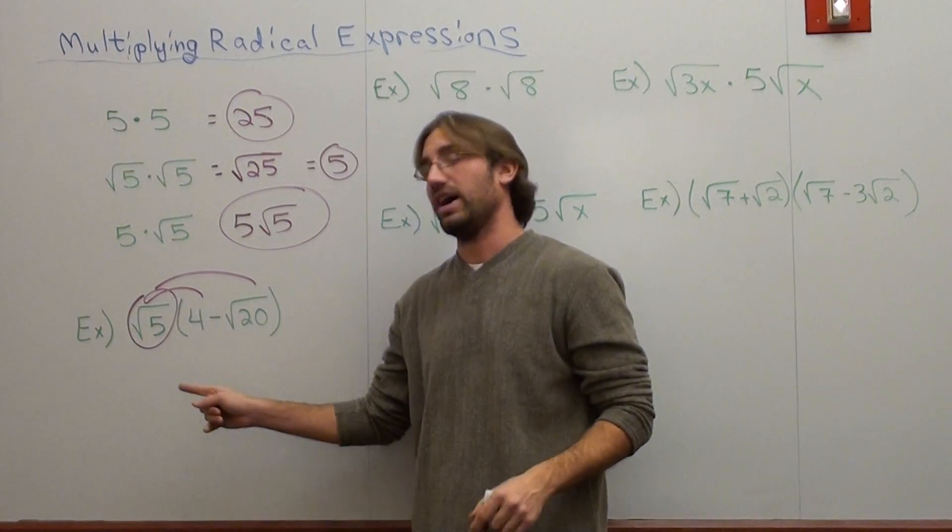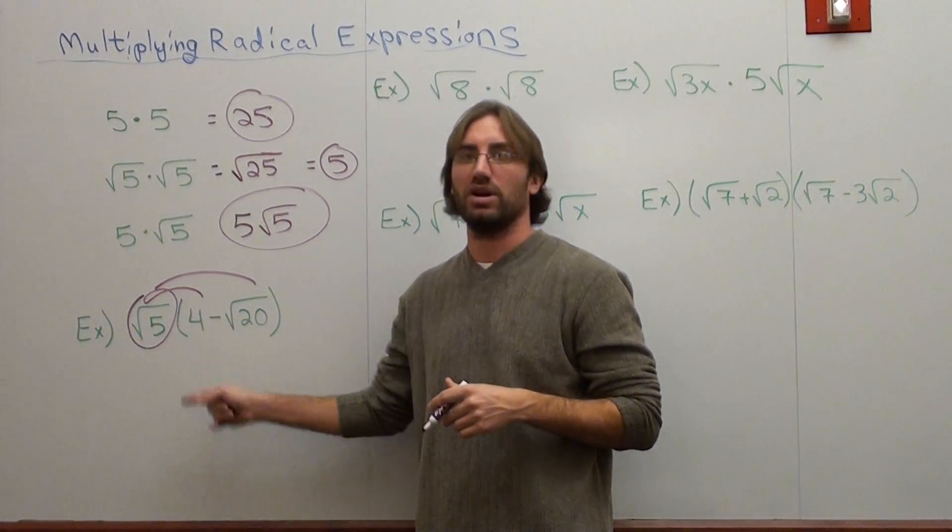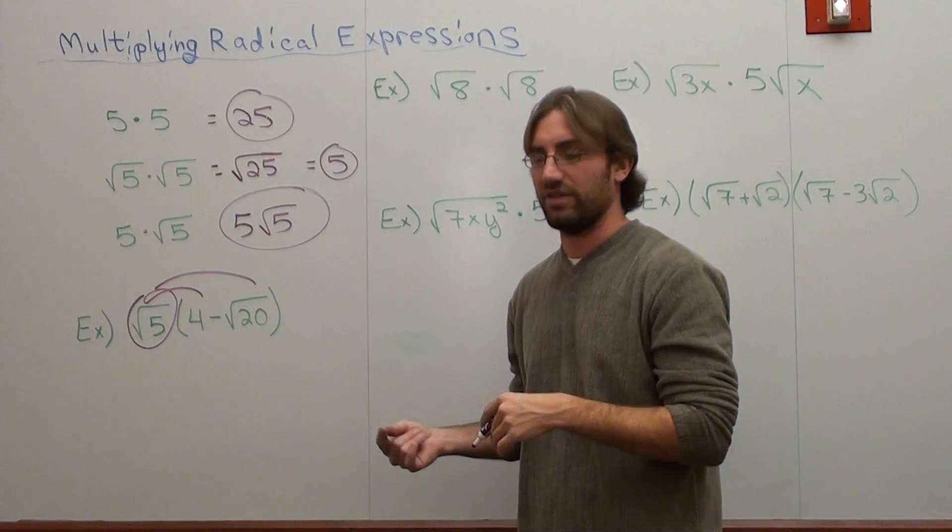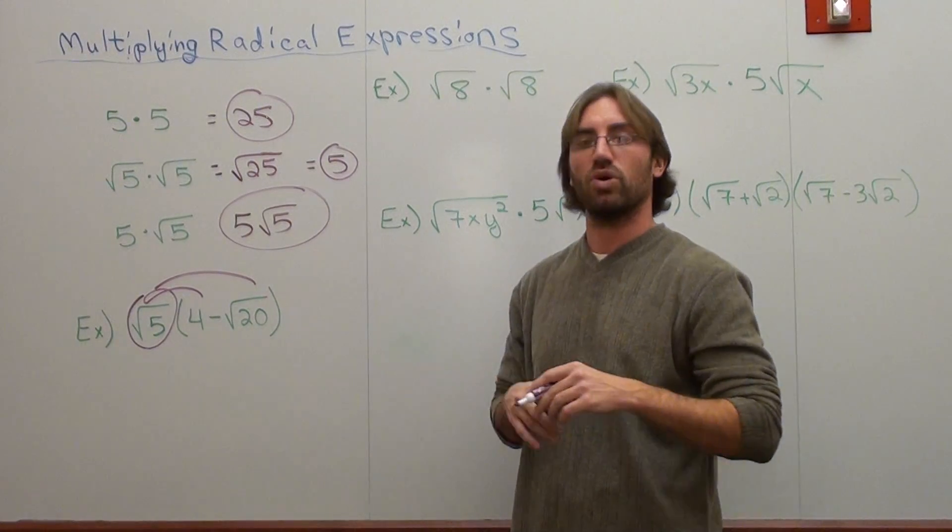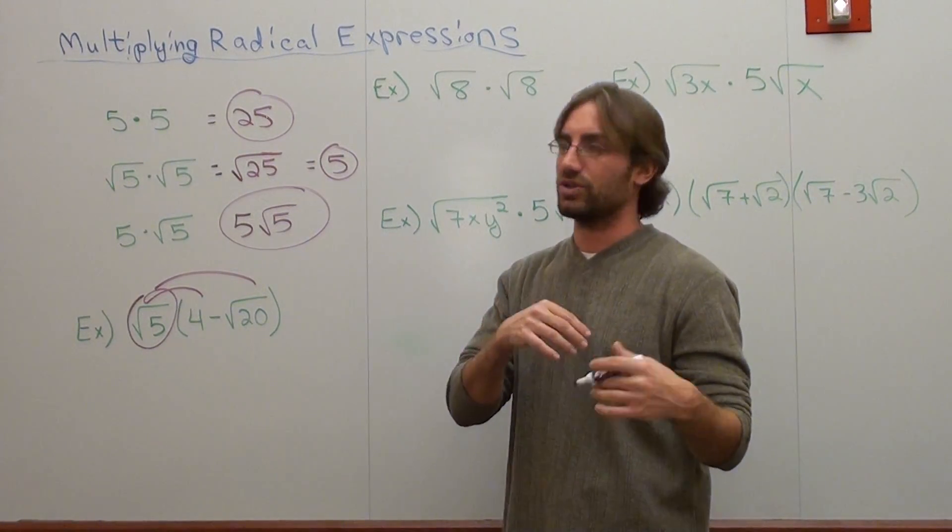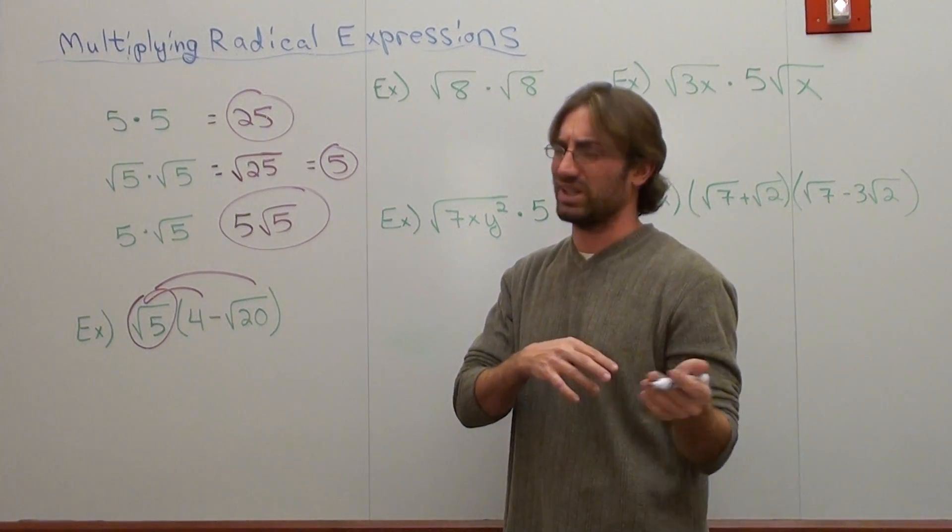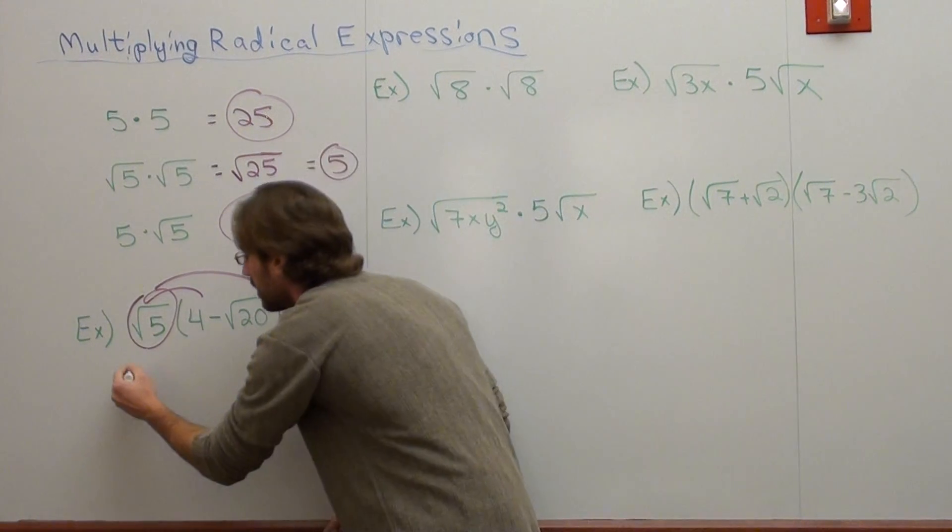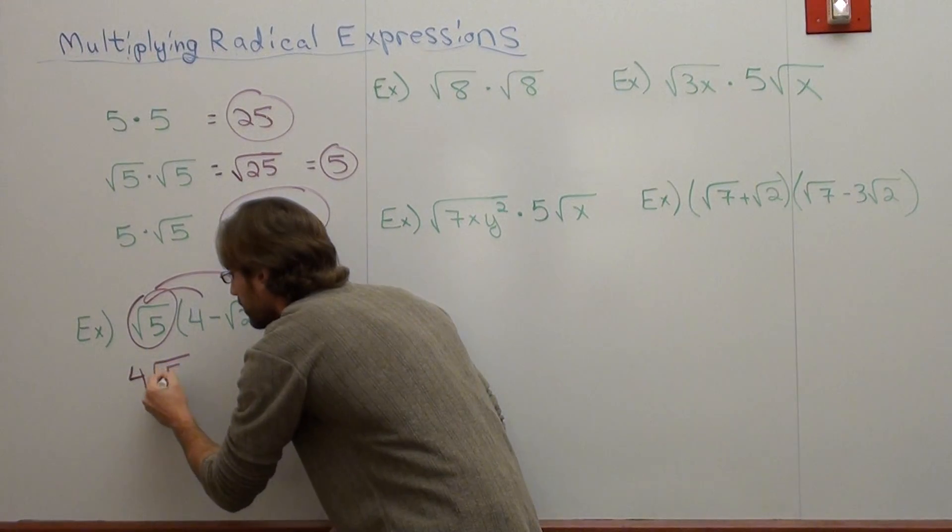I'm going to distribute the square root 5 into both terms. I have square root of 5 times 4. That's 4 square root 5. It's more proper for you to put the number, the integer, in front of the square root.